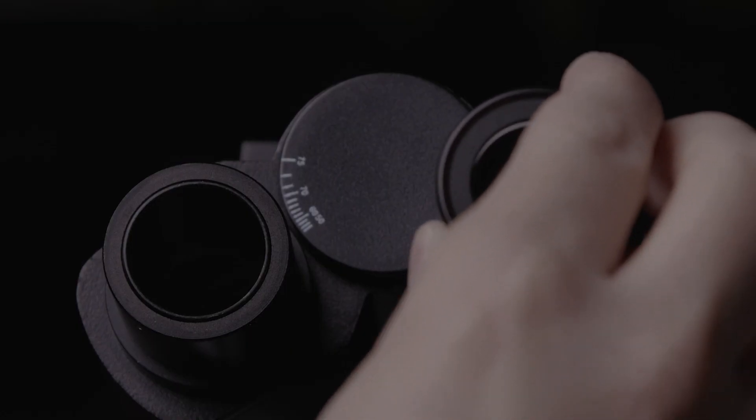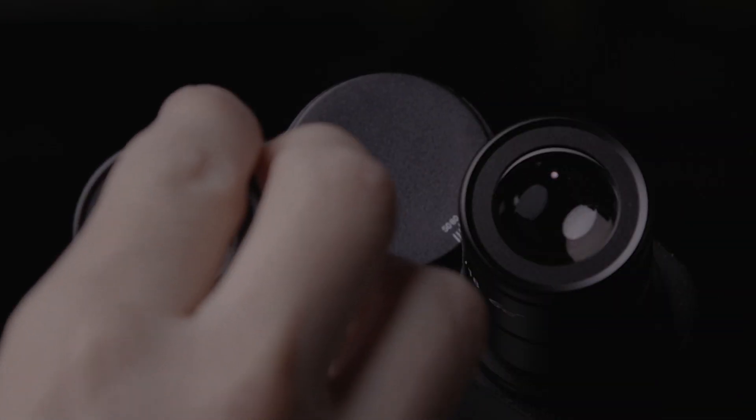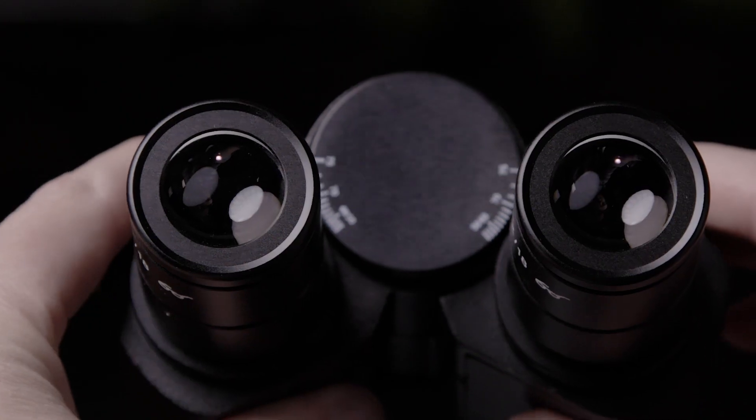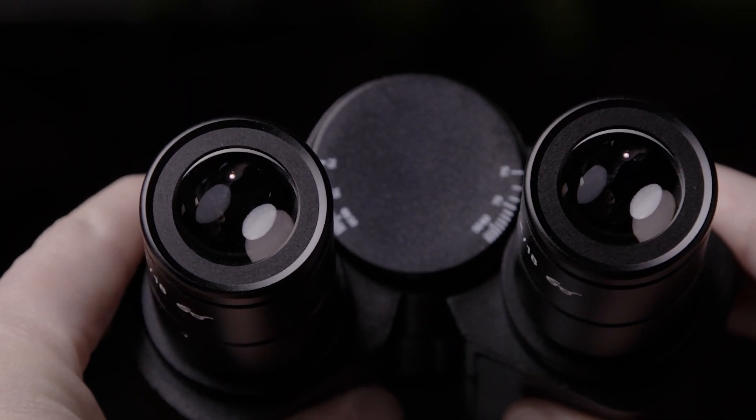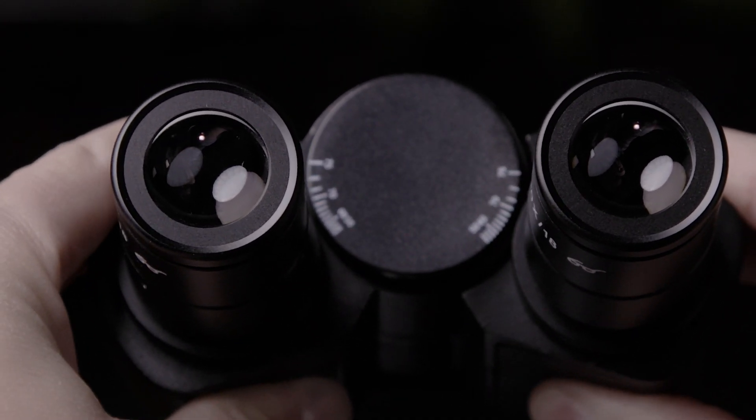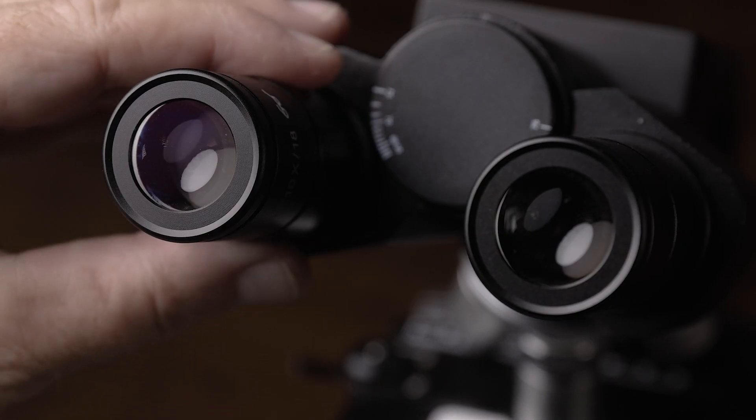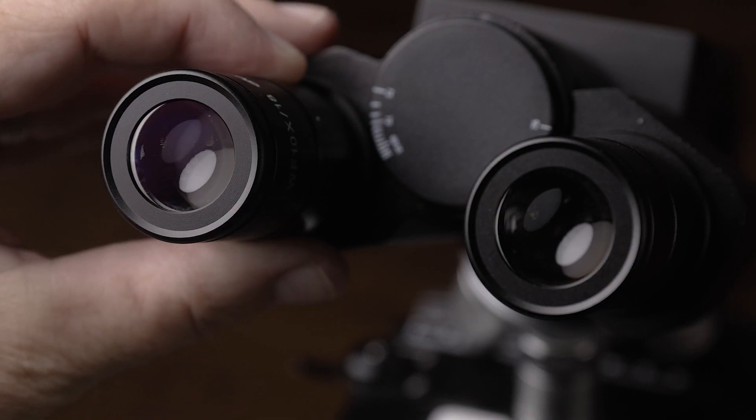If you have a binocular type, you insert both of them like this. You can adjust the distance between the eyepieces for your eyes by rotating the two tubes together, and you can use the diopter knob to adjust the focus balance between the two tubes.